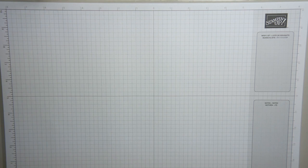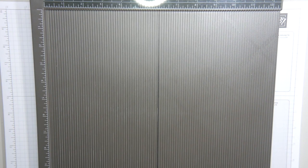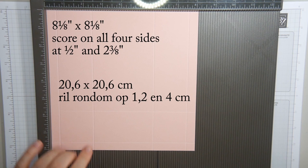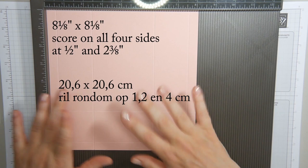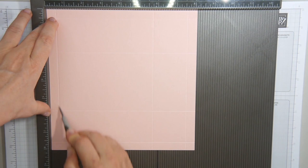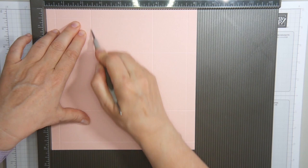So I'll start with the bottom and you need a piece of blushing bride cardstock which is eight and one eighth by eight and one eighth and you're going to score this on all four sides at half an inch and at two and three eighths. I've already done that so I can show you, so half an inch, two and three eighths and I've done that all around so this is last side left.